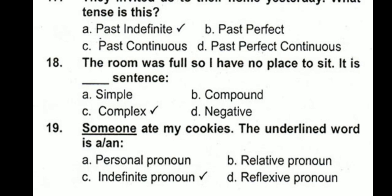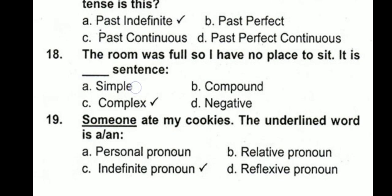In simple sentences, we have one clause — the main or independent clause. In compound sentences, we have two independent clauses. In complex sentences, we have one dependent clause and one independent clause. So this sentence is a complex sentence.